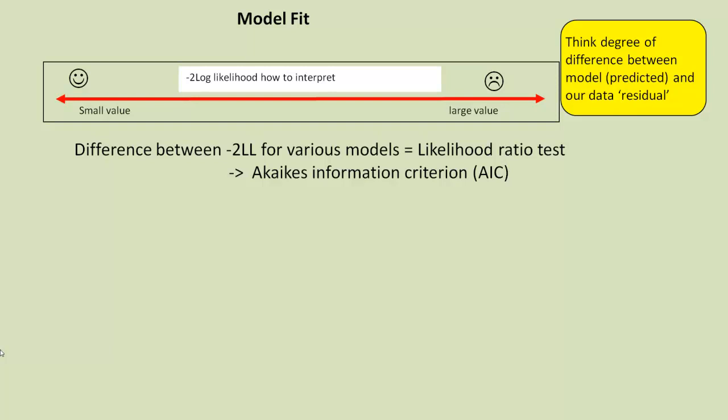There are some problems with this, and to take into account the various problems which you can read about in the chapter, we can use a thing called Akaike's Information Criterion, AIC. And that, again, gives us some indication of model fit and model improvement.